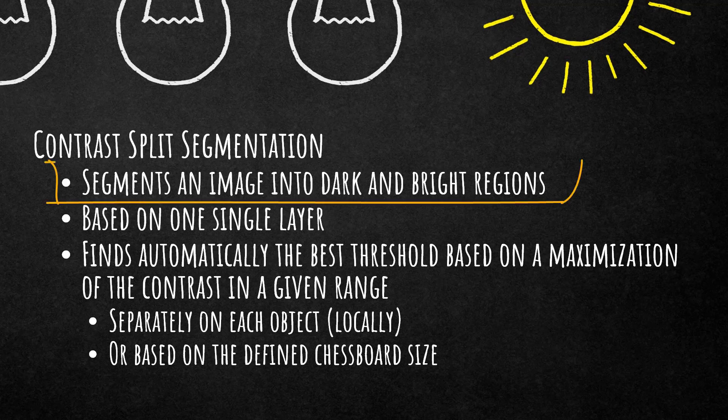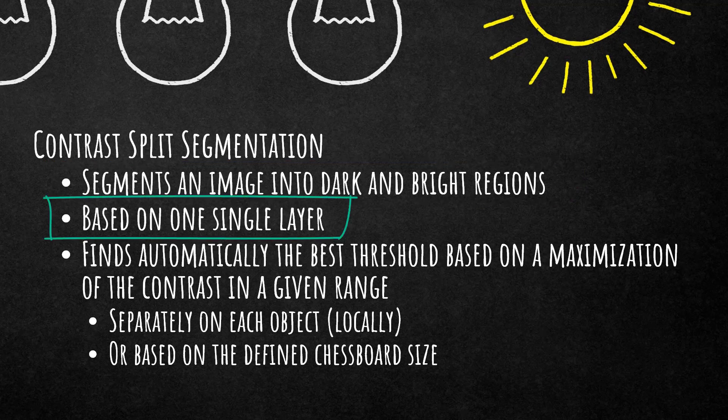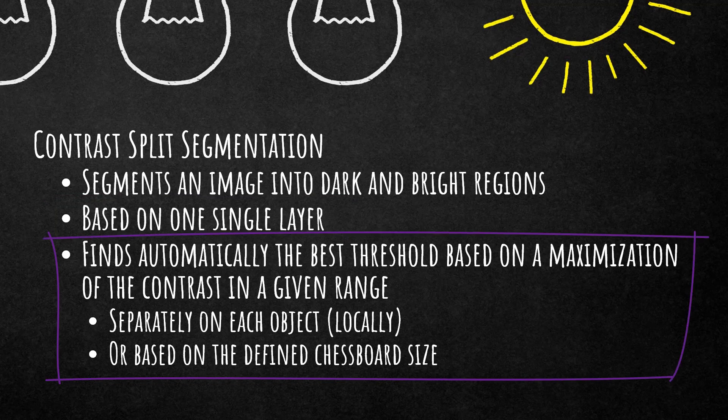What does it do? It segments your image into dark and bright regions, splitting it up based on contrast. It is based on one single layer, and it automatically finds the best threshold by maximizing the contrast within a given range. You define the range, and it looks for the best contrast and splits based on that. The algorithm can be applied locally on different image objects, calculating the best threshold for each object, or based on a chessboard size that you define.